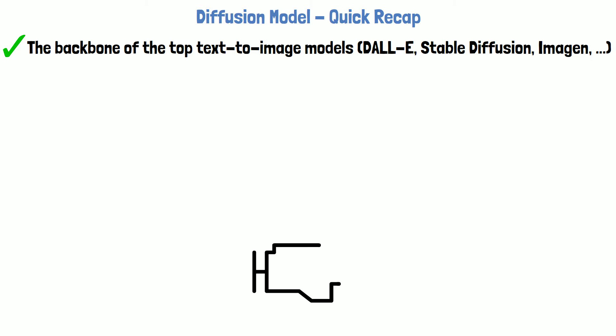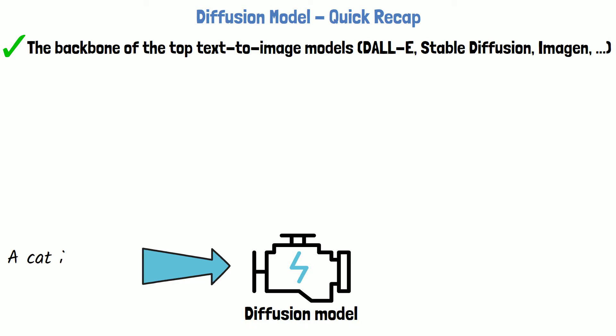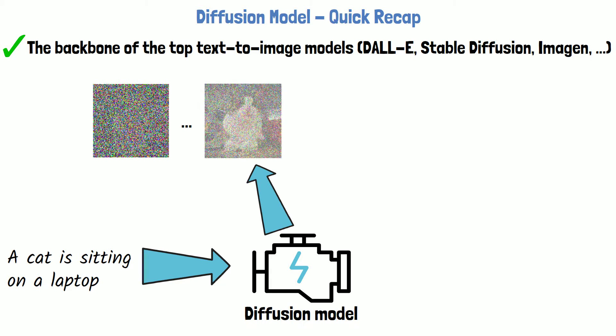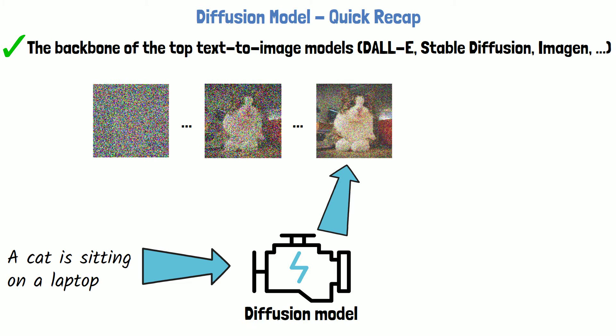Let's start with a quick recap about diffusion models. Diffusion models serve as the backbone of the top text-to-image generation models, such as DALL-E 2, Stable Diffusion, Imagine, and more. Diffusion models get a prompt as input, such as 'a cat is sitting on a laptop.' The model learns to gradually remove noise from an image in order to generate a clear image. The model starts with a random noise image, and in each step it removes some of the noise, with the noise remover conditioned on the input prompt, so we end with an image that matches the prompt.